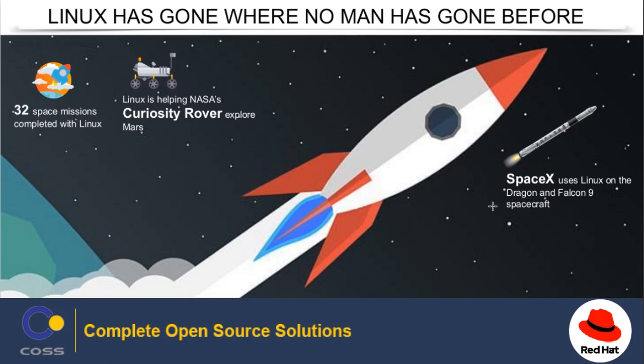Linux is also used by NASA. NASA announced that the Windows XP computers aboard the ISS have been switched to Linux. They migrated key functions from Windows to Linux because they needed an operating system that was stable and reliable. In other news, the first human robot in space, the Robonaut 2, which also runs Linux, is due for an upgrade soon.